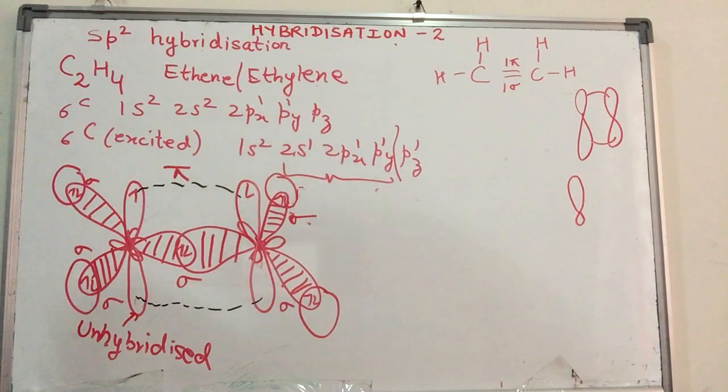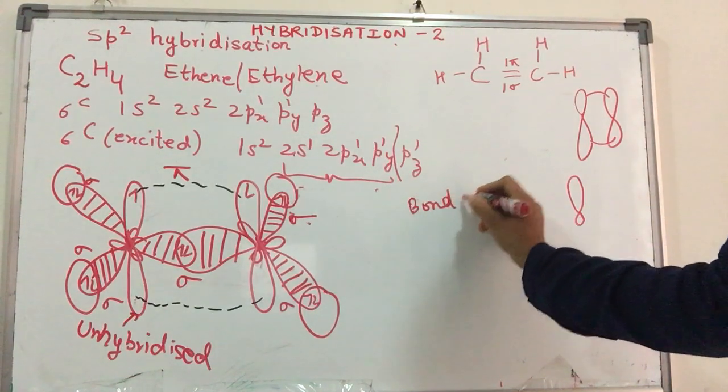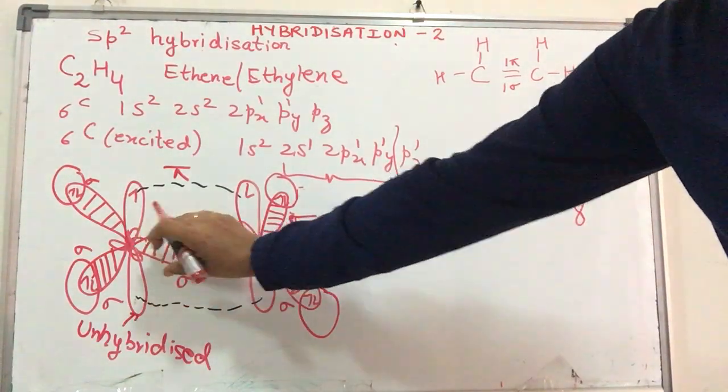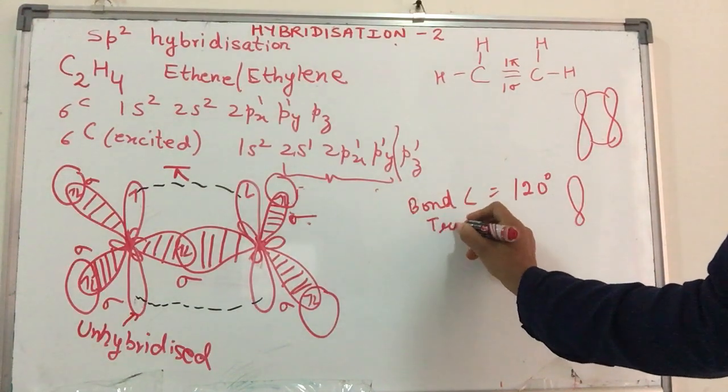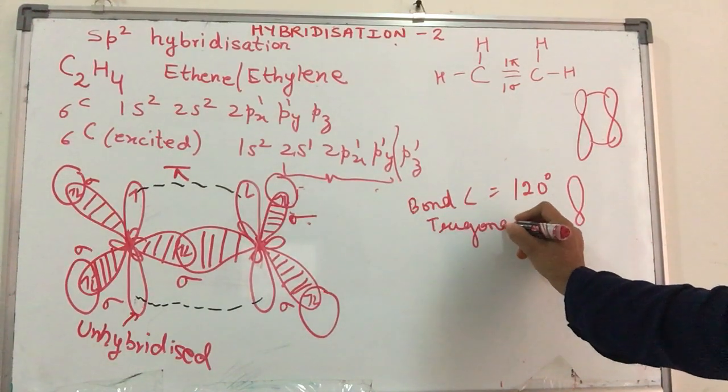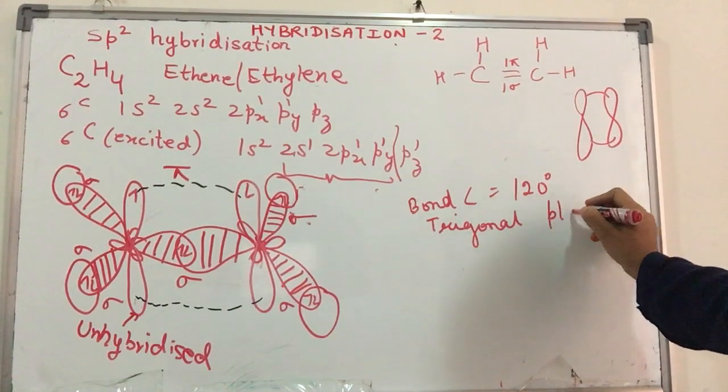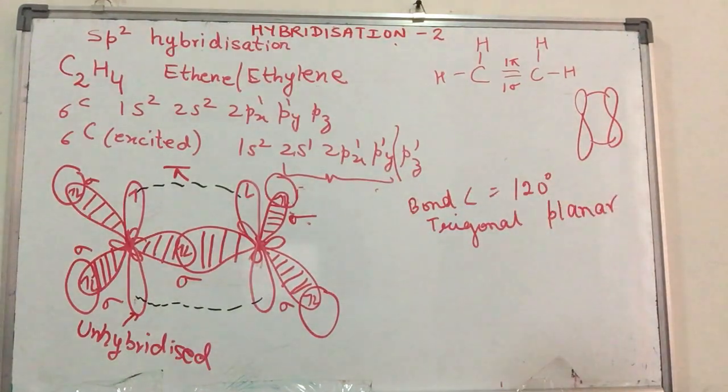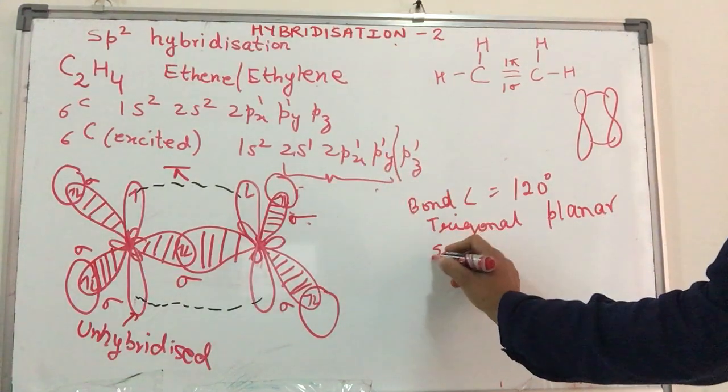Now let us see the shape around each of the carbon atoms. The bond angle that we have is 120 degrees. So around one carbon atom 1, 2 and 3. So the shape becomes trigonal planar. Why planar? Because it is in the same plane. Trigonal planar. We have bond angle of 120 degrees. We have sp2 hybridization.